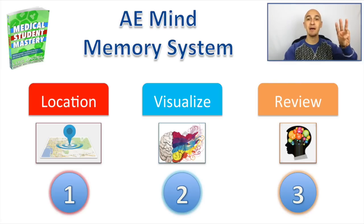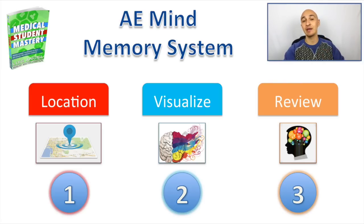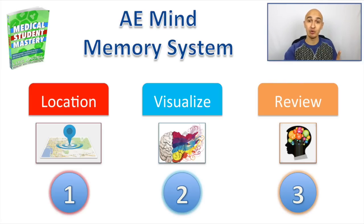There's a three-step process to being able to memorize anything quickly. First step: you need a location. Second step: you need to visualize. And third step: you need to review.